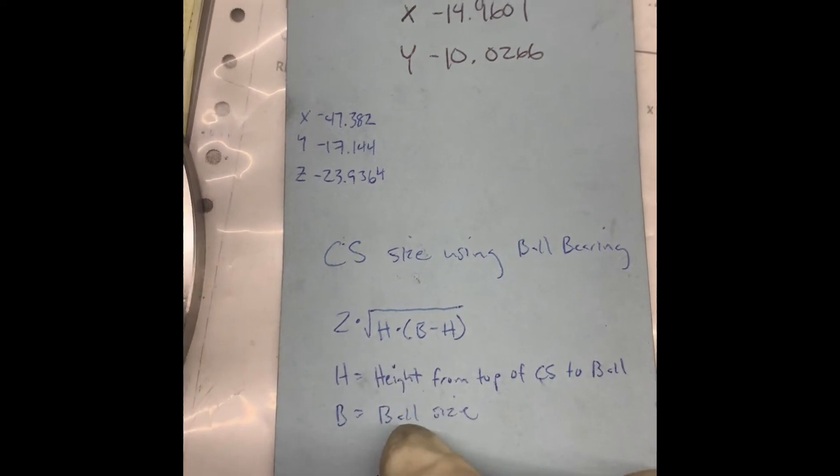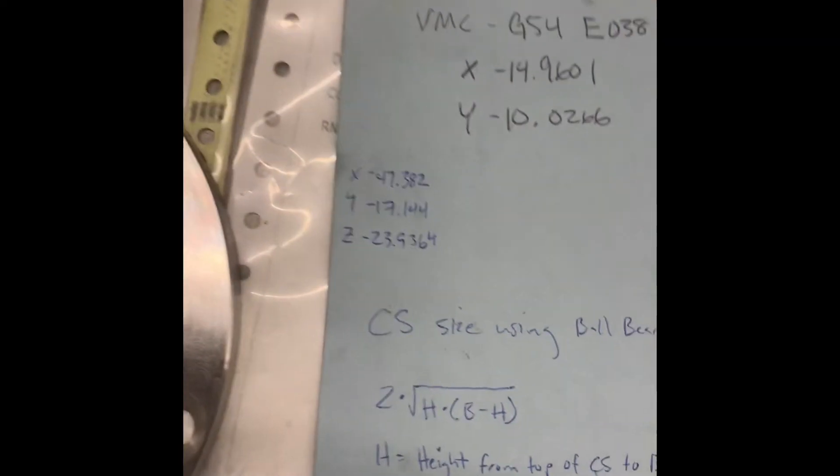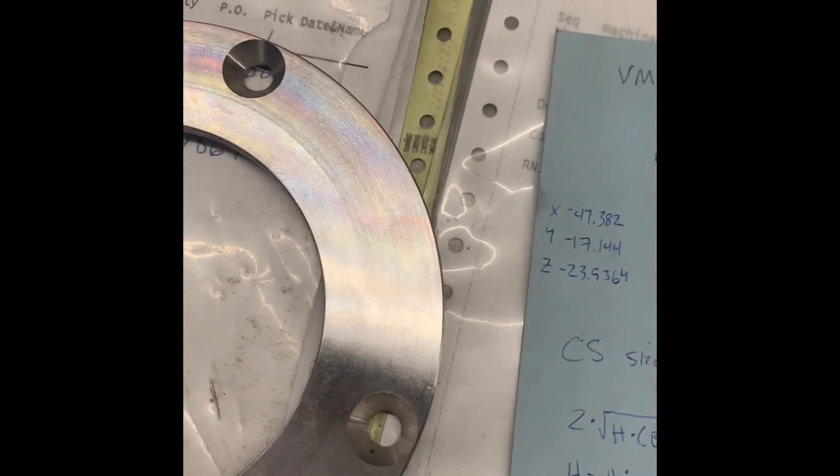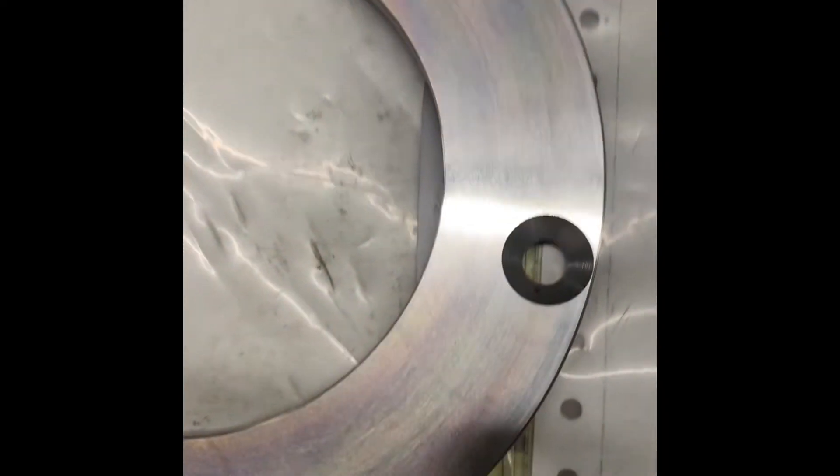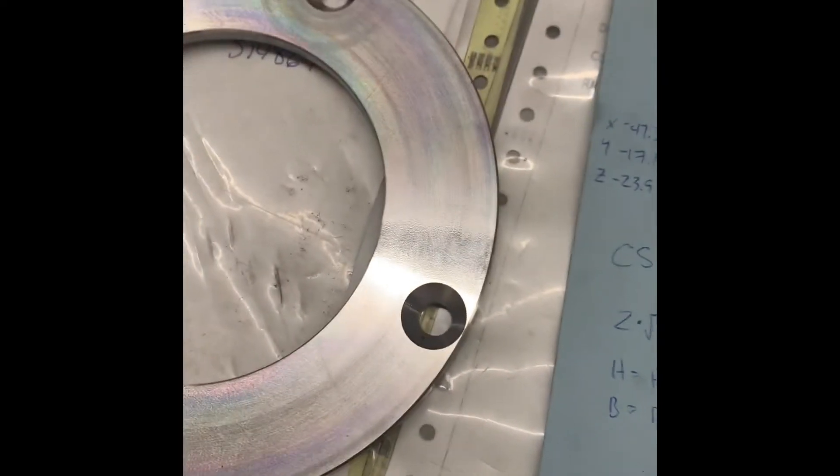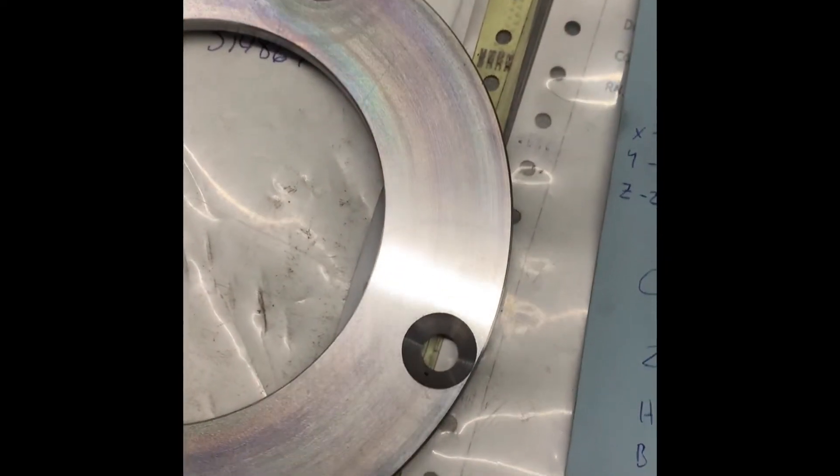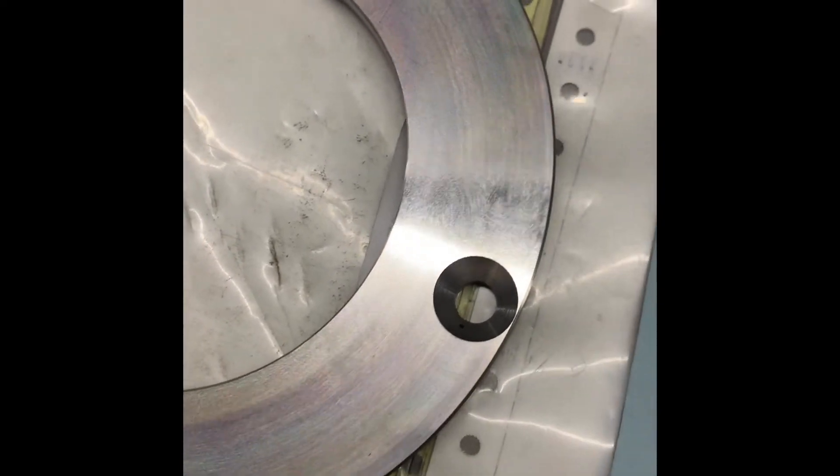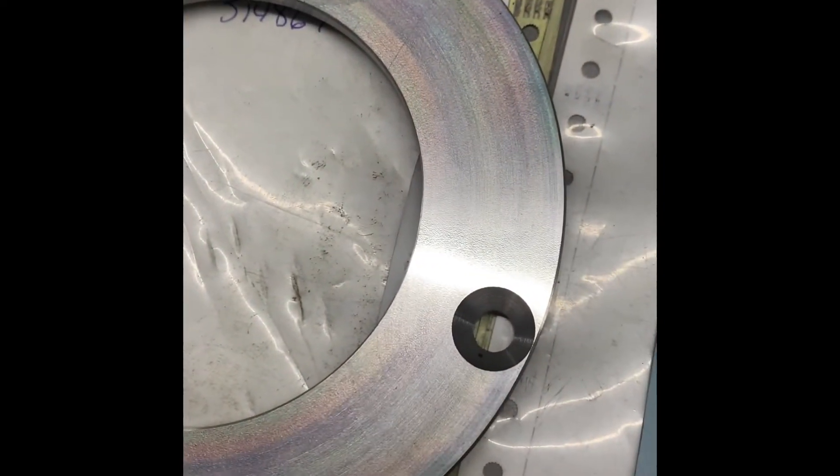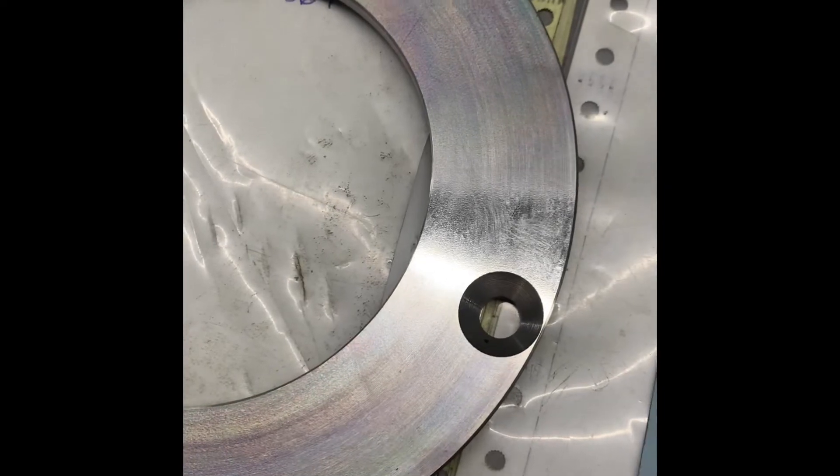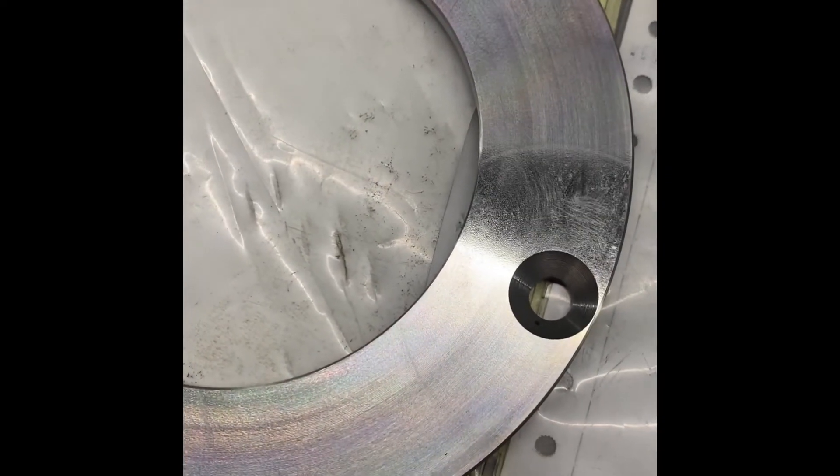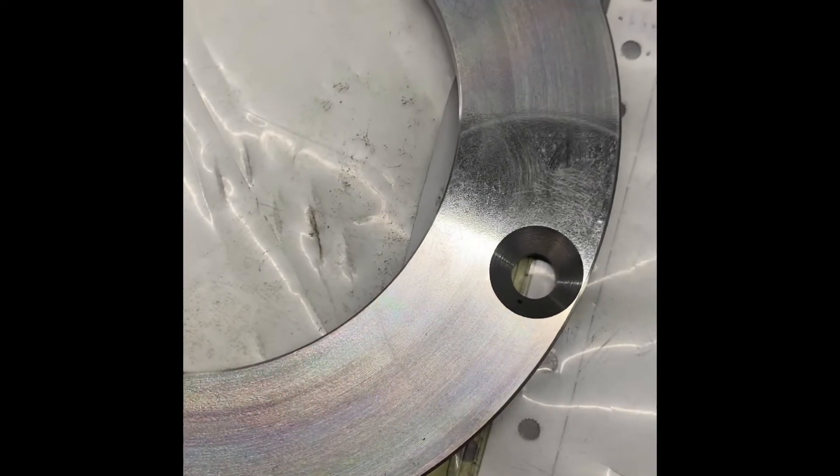So we're going to take the size of our ball, which was 1.125. And then we're going to take the number that we got on the height stand, which is the distance from the top of the ball to the top of the part, which is 1.0165. And then we get 0.1085.